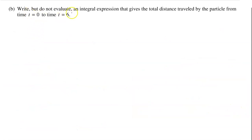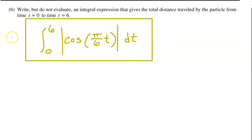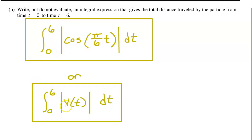Part B: Write, but do not evaluate, an integral expression that gives the total distance traveled by the particle from time t equals 0 to time t equals 6. Using the formula for total distance traveled from a to b, which includes an absolute value, the total distance is the integral from 0 to 6 of the absolute value of cosine of pi over 6t, dt. Or, since v of t was defined in the setup, you could write it using absolute value of v of t.